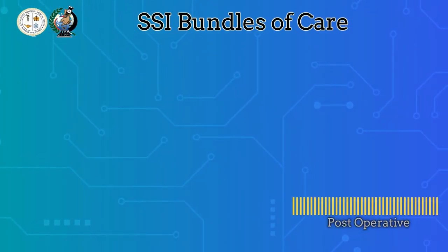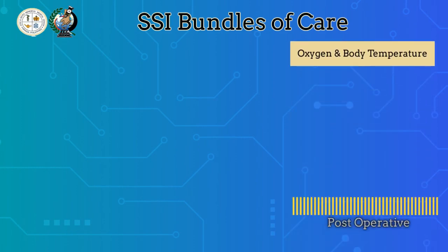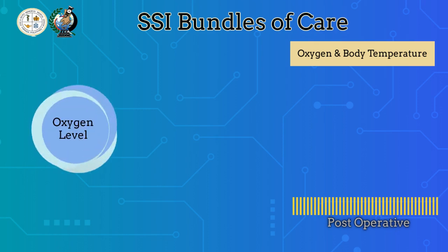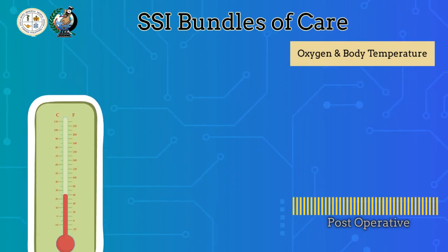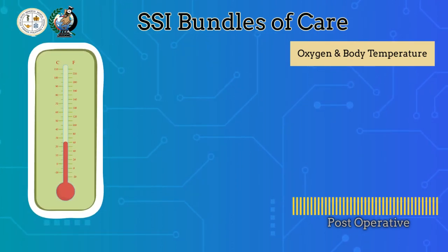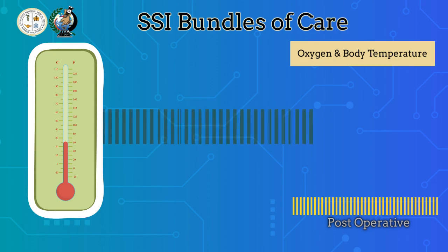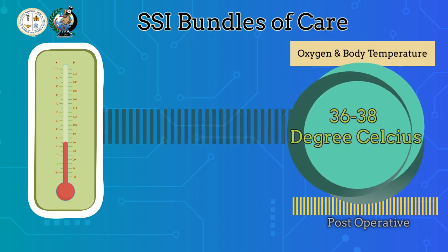We've come to the last phase, which is the post-operative phase. In this phase, we need to consider the oxygen and body temperature of our patient to prevent surgical site infection. According to NICE, sufficient oxygen to maintain a hemoglobin saturation of more than 95% is required both during and post-operative stages for wound healing and prevention of infection. When dealing with body temperature, maintaining normothermia is vital — we need to maintain temperature between 36 degrees Celsius to 38 degrees Celsius during the entire phase. Pre-operative and post-operative warming using body warmers and heating blankets to maintain normothermia is recommended.